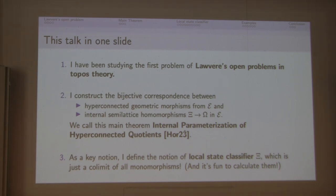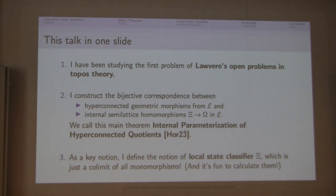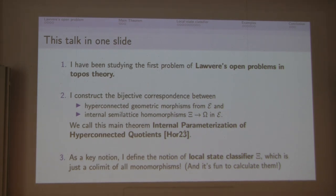As a key notion, I will define the notion of local state classifier, which is just the colimit of all monomorphisms. I will put emphasis on the last part because the definition of colimit of all monomorphisms is elementally defined and is kind of independent from topos-theoretical knowledge. And I want to say — it's fun to calculate.